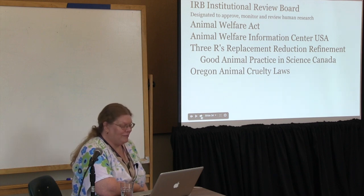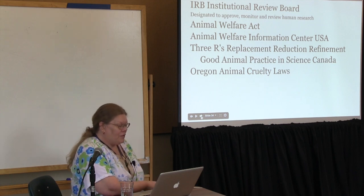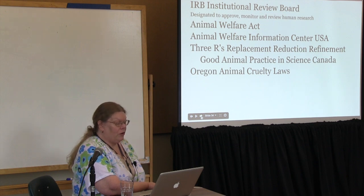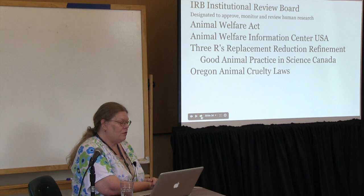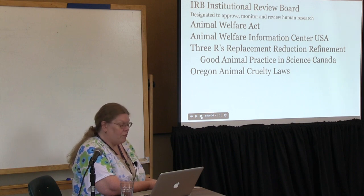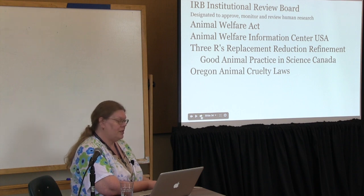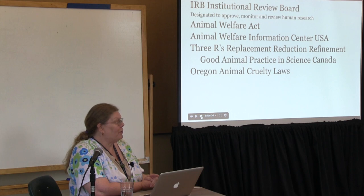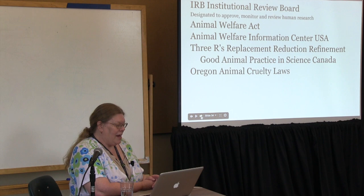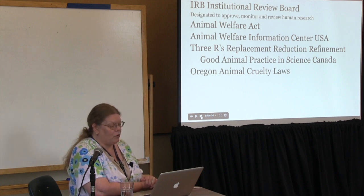Whenever you study people or animals, you have to tell them what you're going to do, what the outcomes are, and what's going to happen to them. For people and animal studies, there's an IRB — the Institutional Review Board — which is designed to approve, monitor, and review human research at institutions. They require a consent form explaining exactly what's going to happen, which those being studied have to sign. For animals, we also have the Animal Welfare Act. In Canada, they have the three R's — replacement, reduction, and refinement — good animal practice and science. And Oregon animal cruelty laws cover animals, with the main requirements being that they have fresh water, are fed, and have a good environment.